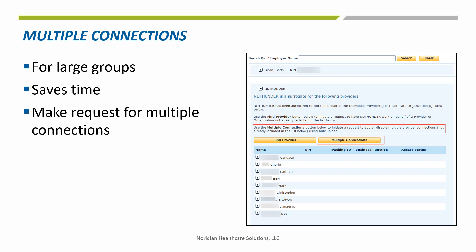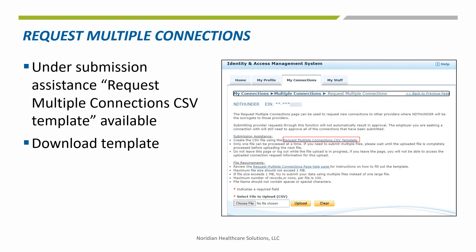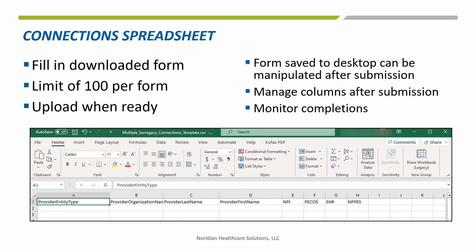A newer feature in Identity and Access is the ability to request multiple connections at the same time, instead of the time-consuming one-at-a-time process. If you have multiple providers to request surrogacy access to, use the multiple connections option. This provides access to both requesting connections and disabling. To focus on requests, select that button. You are now at a page with instructions and a link to a template. Download the form using the link under Request Multiple Connections CSV Template. Complete the open form — it is saveable to your desktop, and after submission can be manipulated to add additional columns for your record keeping. There is a limit of 100 per form. Follow the submission steps to ensure successful requests for surrogacies.